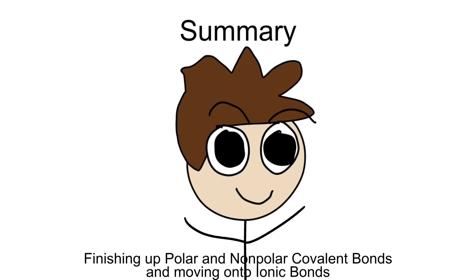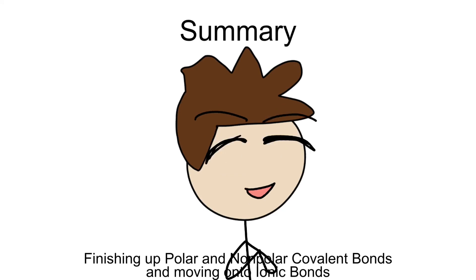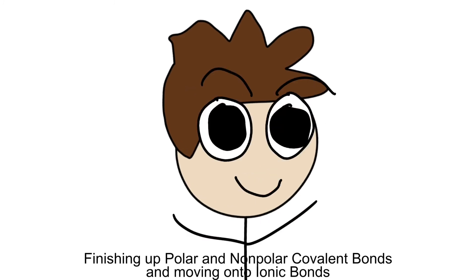To summarize: non-polar covalent bonds usually have atoms that have no charge. Polar covalent bonds move up a bit and have partially charged properties. And finally, ionic bonds are when atoms are fully charged. I hope you've learned a lot from this video. In the next video, we're going to talk about the actual formations and structures of molecules that form the basis of life.